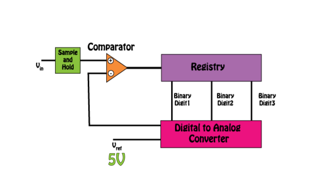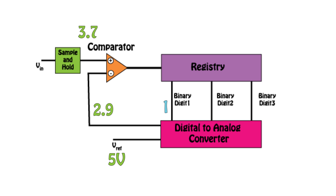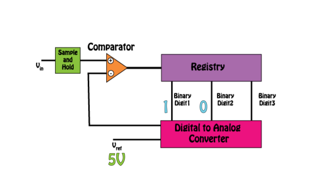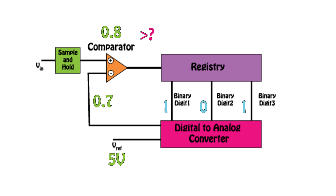So let's look at an example. If the sampled voltage is 3.7 volts, then the first bit will be a 1, and the next bit will be 0.8 volts. Since this is not greater than 1.4, the second bit will be set to 0. The 0.8 volts is greater than the third bit, so that will be set to 1. This gives us a binary code word of 1-0-1.